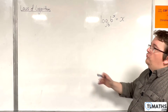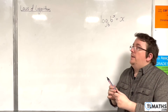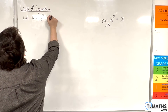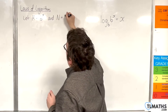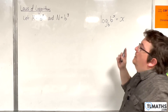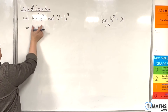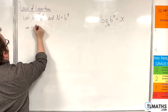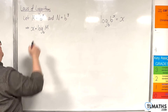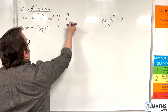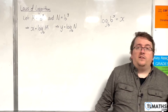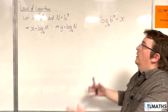To introduce the laws of logarithms, first of all I'm going to let capital M be b to the x, and let capital N be b to the y. Then, going from exponential form to logarithmic form, x is going to be log base b of M, and y will be log base b of N. We're going to utilise that to bring in our laws.